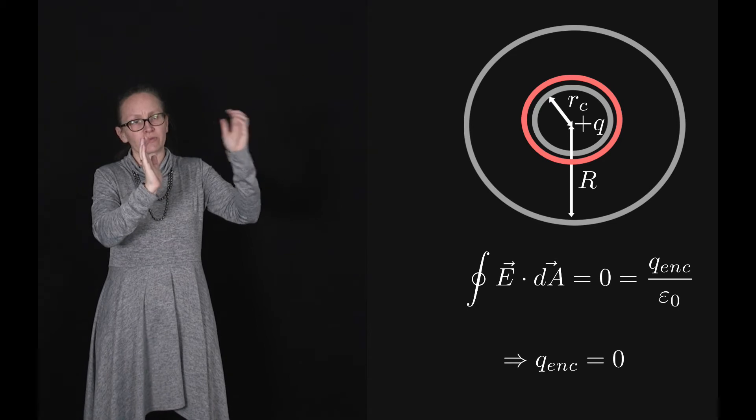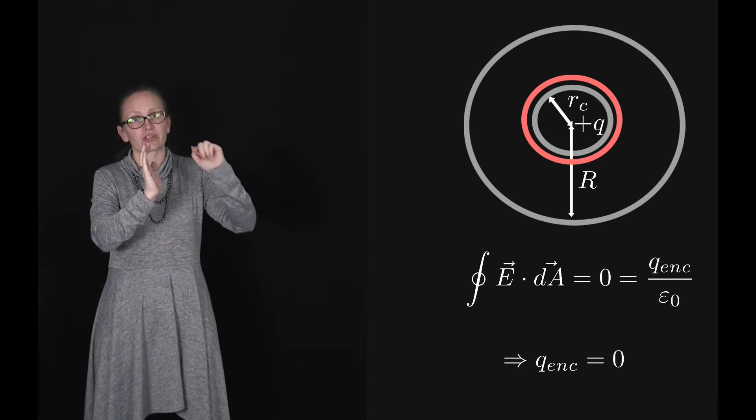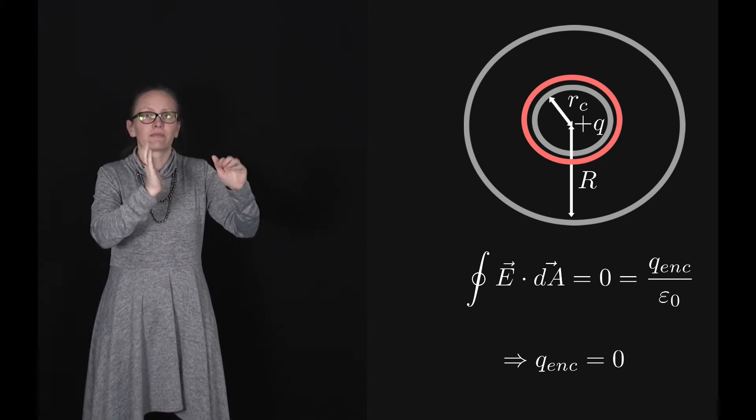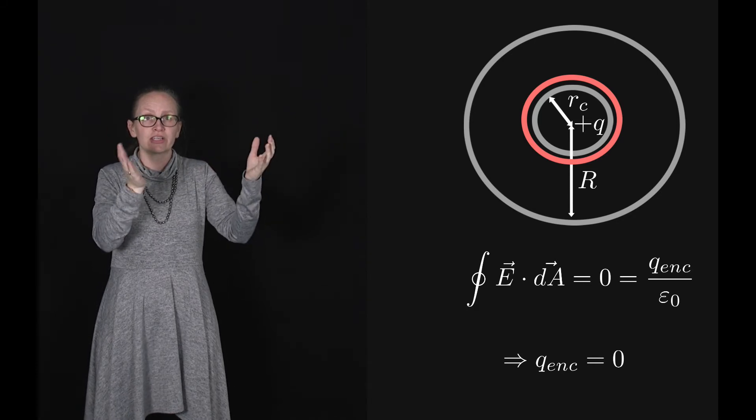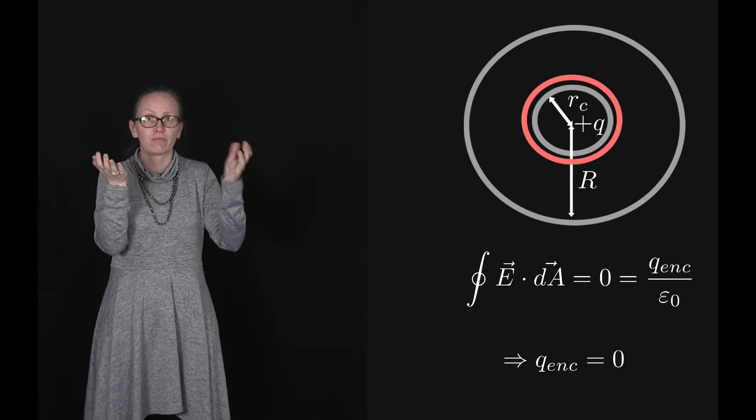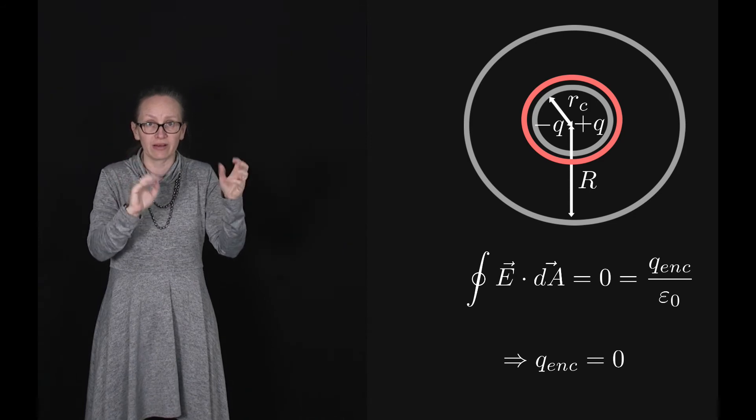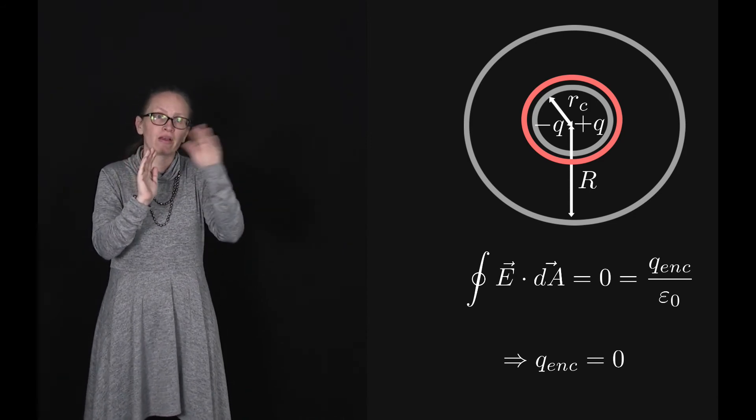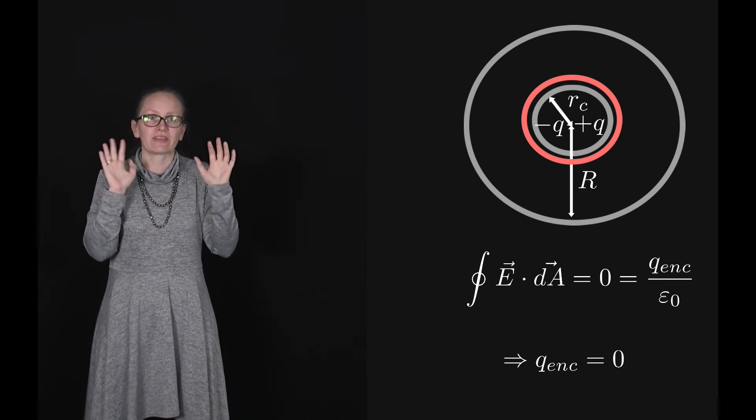Within our Gaussian surface we know that we've got a charge of plus Q inside the cavity. But because we've got a total charge zero, that tells us that there must be another charge of minus Q somewhere there as well. And so that must be on the surface of that cavity.